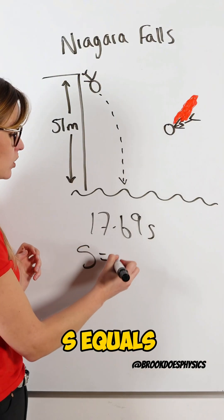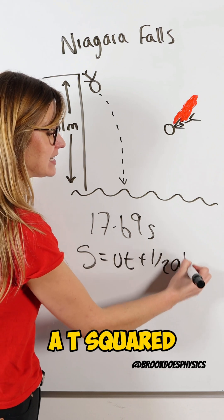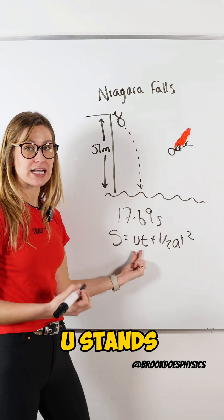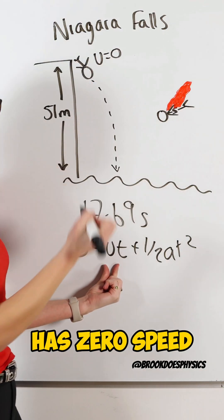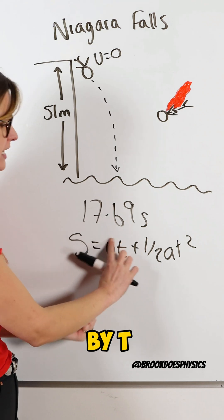S equals UT plus one half AT squared. U stands for initial speed. Because he initially has zero speed, zero times T just becomes zero.